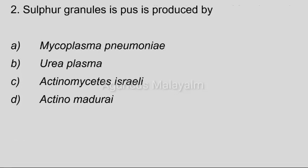Second question: Sulfur granules in pus is produced by? Answer options — Option A: Mycoplasma pneumoniae. Option B: Ureaplasma. Option C: Actinomycetes israelii. Option D: Actinomycetes israelii. Correct answer: Option C, Actinomycetes israelii.